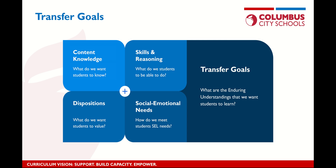When we think about transfer goals and how to establish what we want them to be, there's a lot to take in. First, what do we want students to know? What is the content knowledge they need to wrestle with ideas happening in the world today? Then, what are the skills and reasoning capacities — what do we want students to be able to do? Especially in the social media age, the ability to be media-savvy and evaluate online information is a critical skill set. So it's the foundational knowledge, the skill sets, and the dispositions.